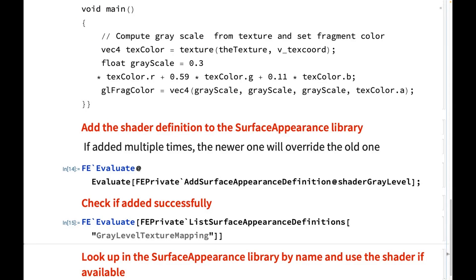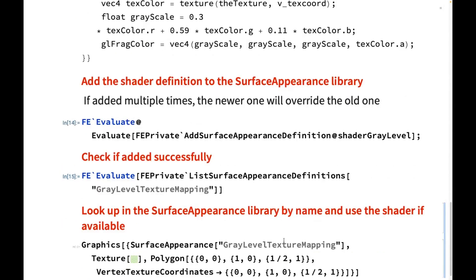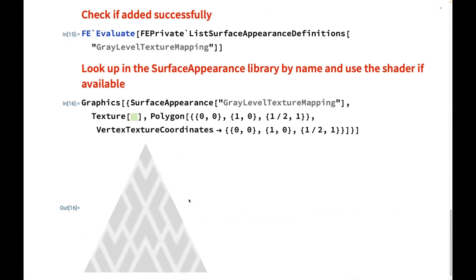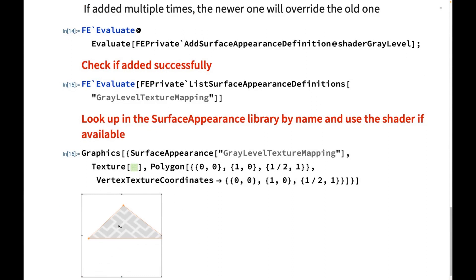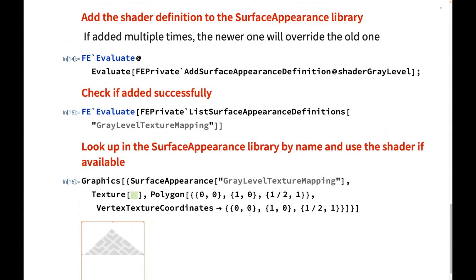Everything looks good. We just need to use it and reference it by SurfaceAppearance name — it will look into the library and pick it up. If the program requires a texture, then you need to give it a texture as well. Now you get a customized texture, and with that all the interactions just work. Resizing also works as well.